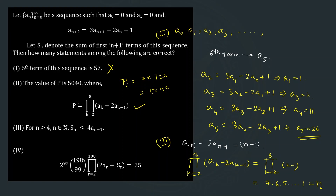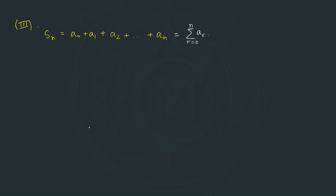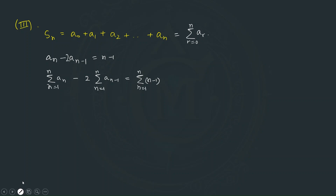We use the relation aₙ − 2aₙ₋₁ = n − 1 and take summation from n = 1 to n. The left side becomes the summation of aₙ minus 2 times the summation of aₙ₋₁, equal to the summation of (n−1). The first summation is Sₙ − a₀, and the second summation, when expanded, becomes a₀ + a₁ + ... + aₙ₋₁.